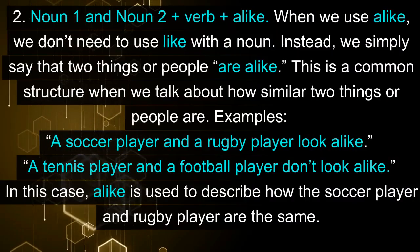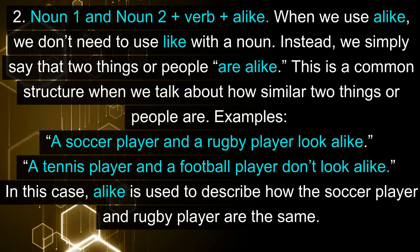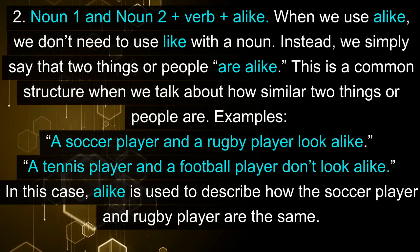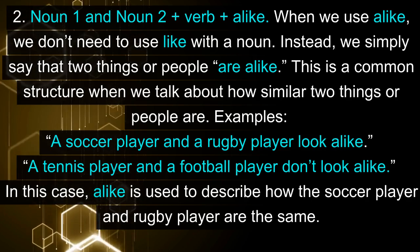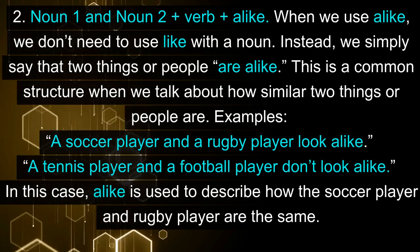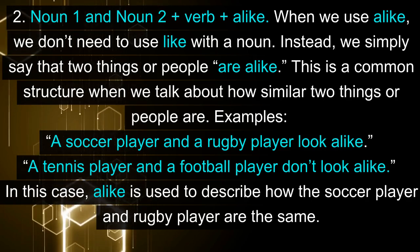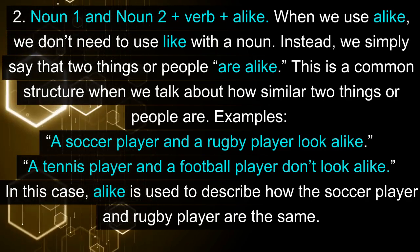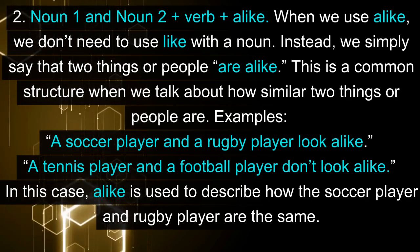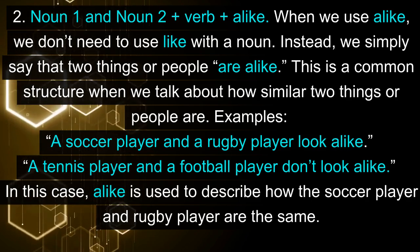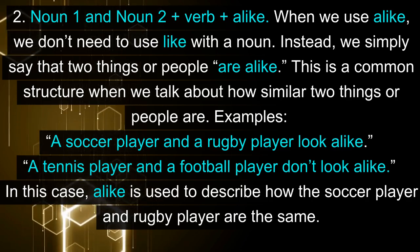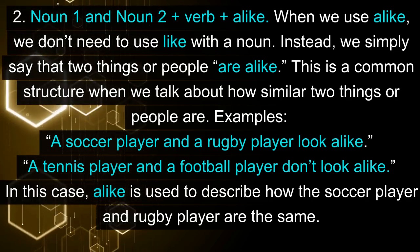Pattern 2: Noun 1 and Noun 2 + verb + alike. When we use 'alike,' we don't need to use 'like' with a noun. Instead, we simply say that two things or people are alike. This is a common structure when we talk about how similar two things or people are. Examples: 'A soccer player and a rugby player look alike.' 'A tennis player and a football player don't look alike.' In this case, 'alike' is used to describe how the soccer player and rugby player are the same.